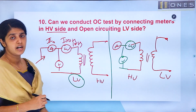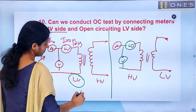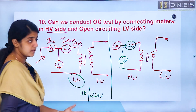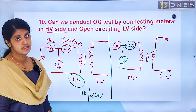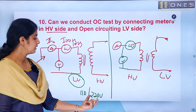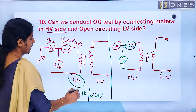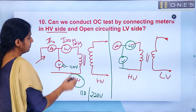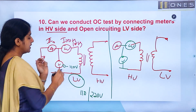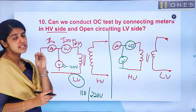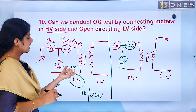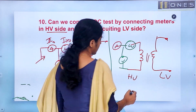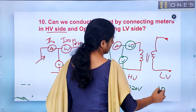When you connect the meters on the LV side of the transformer, you connect at 110 V. If you connect to the HV side — for example, if the transformer is 220 V on HV side and 110 V on LV side — you apply voltage to the HV side. The voltmeter and wattmeter would then be rated for 110 volts on the LV side. If you want to do the test from the HV side, the meters would need to handle 220 volts.